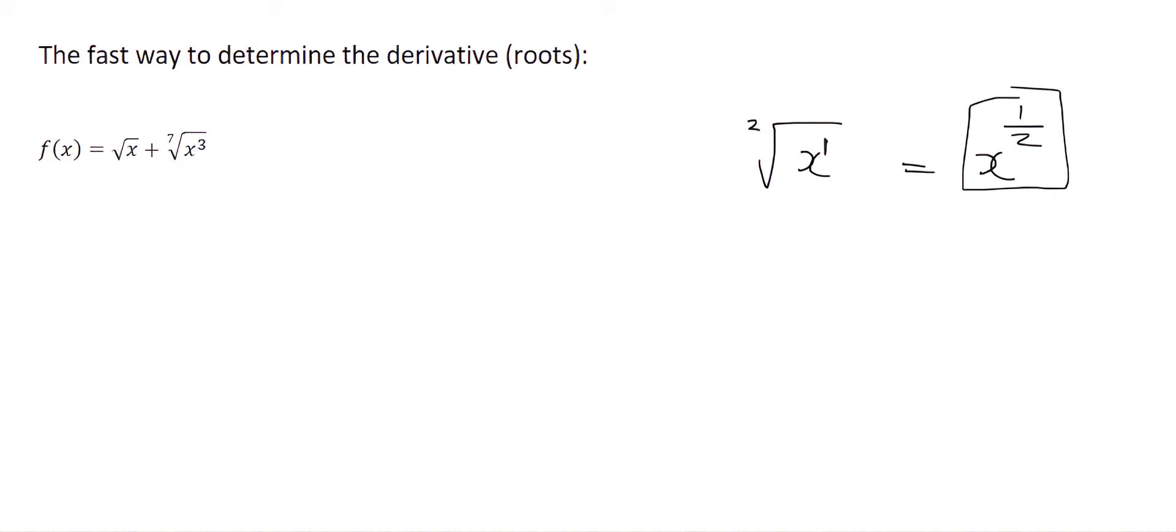Once it is written like that, then you can use the technique that we did in the previous video, where this half would multiply into the front, since that would be a half, and then you would minus 1 from that exponent.